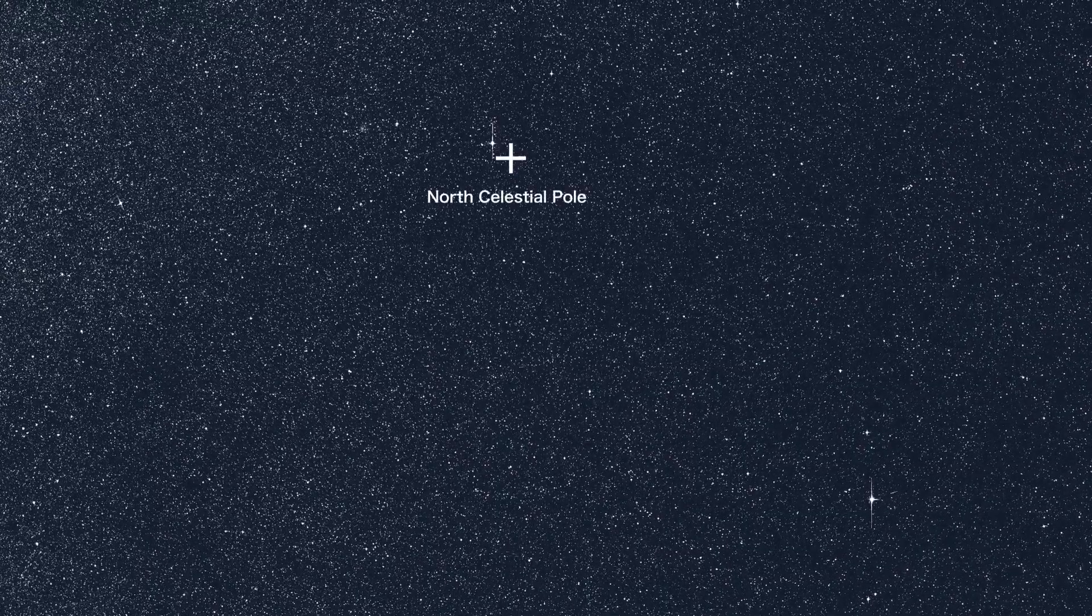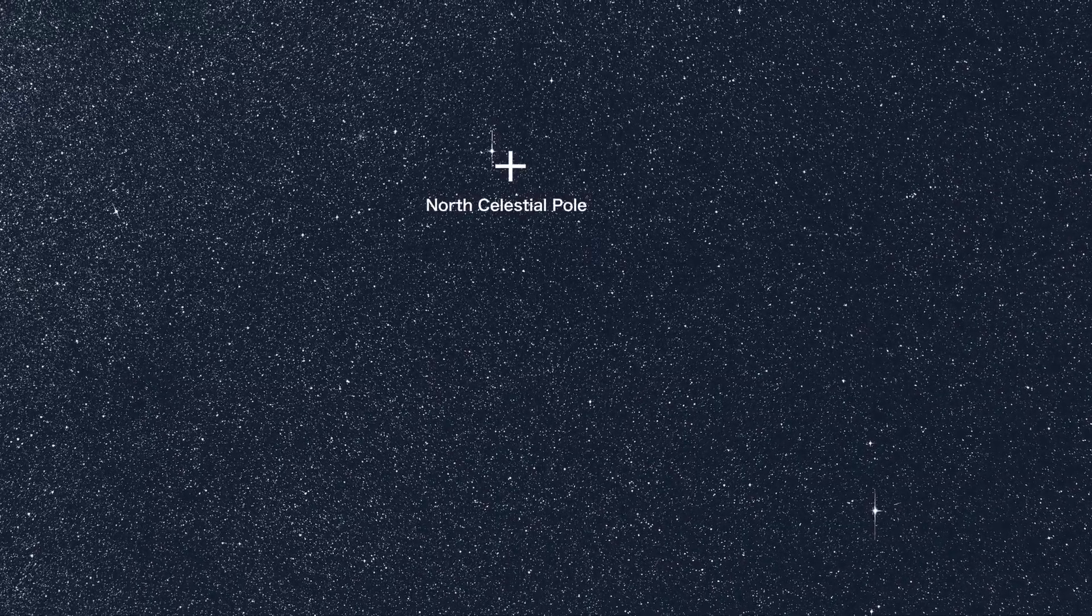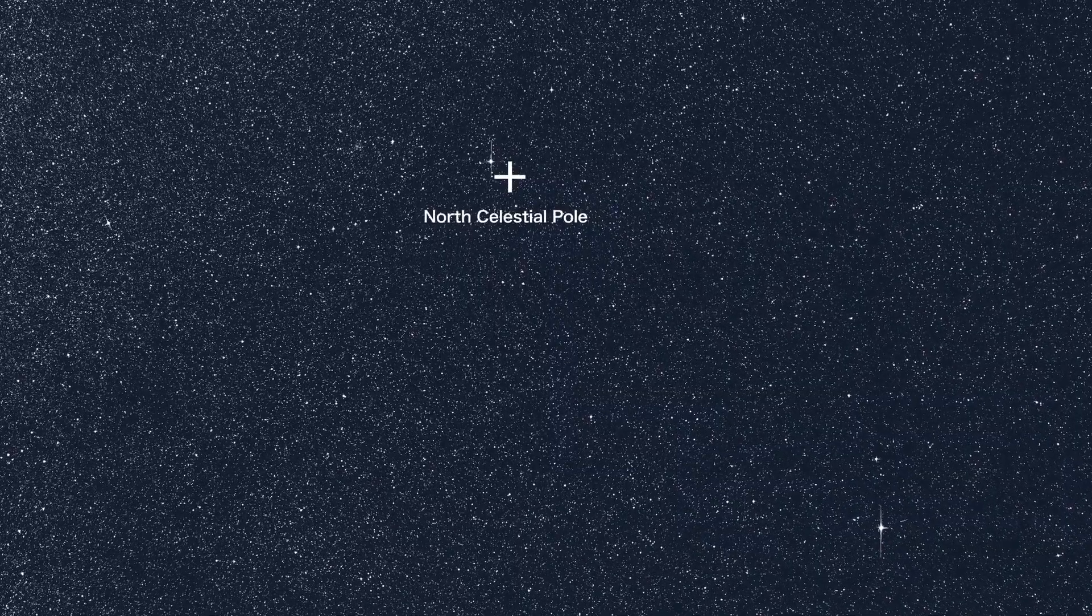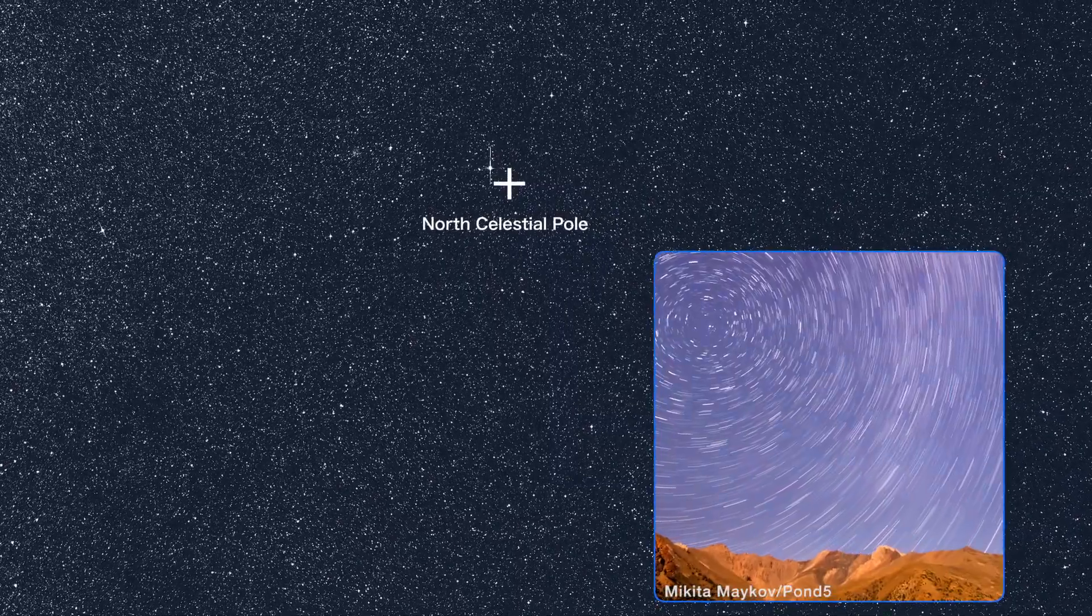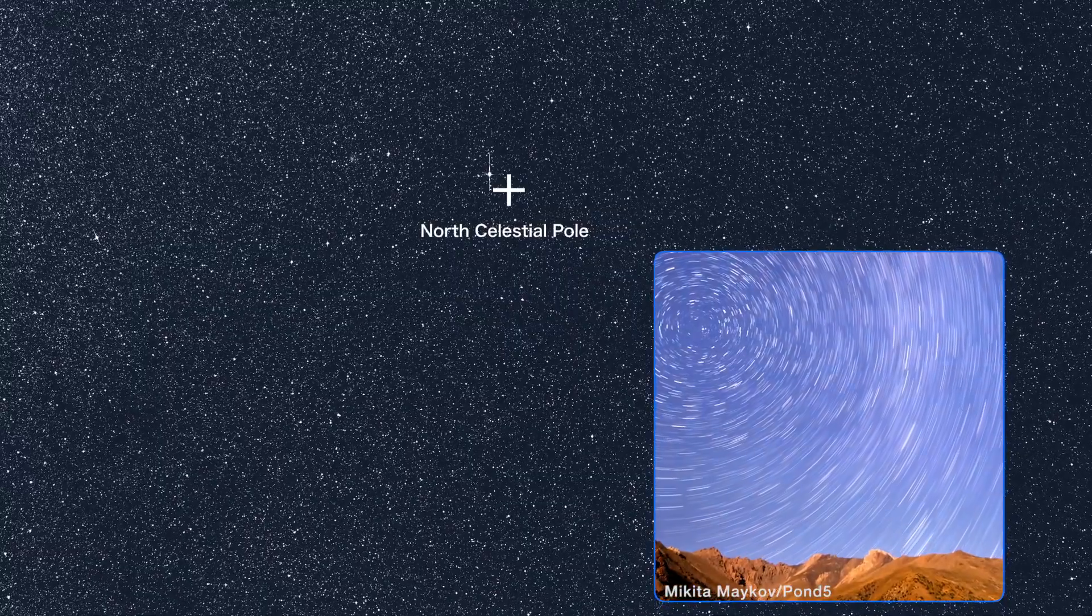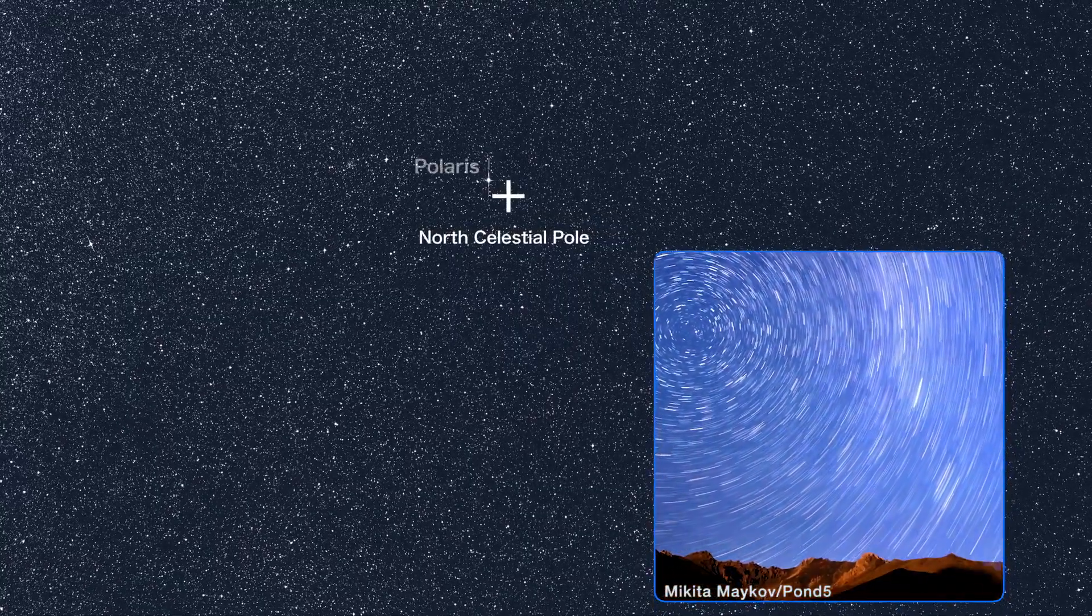More familiar to sky watchers is the north celestial pole. This is where the north end of our planet's spin axis intersects the sky. The whole starry vault appears to revolve around this point, conveniently marked by the nearby star Polaris.